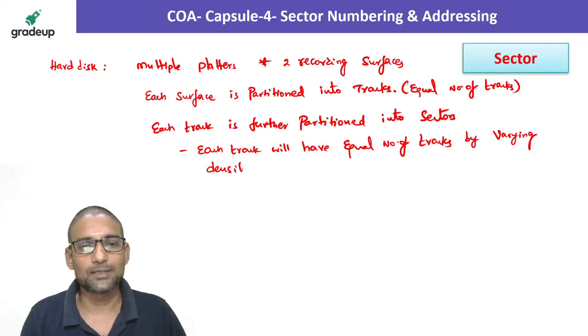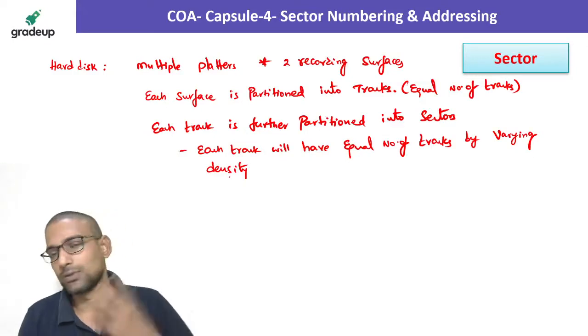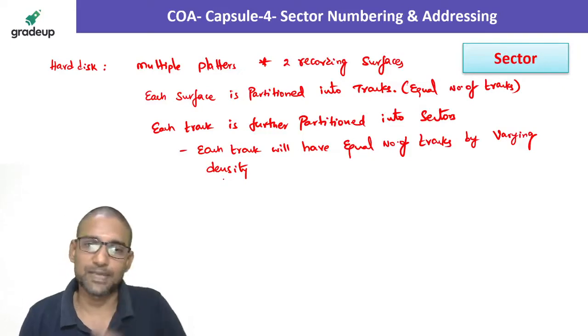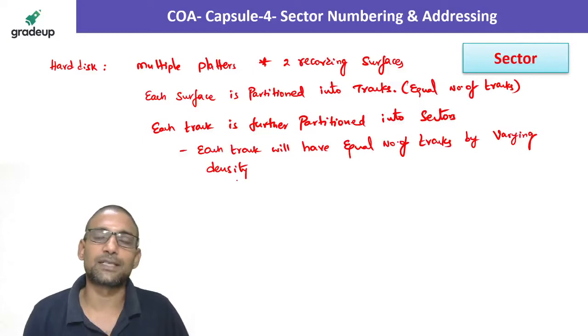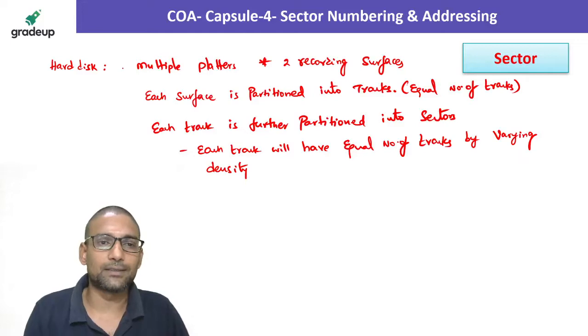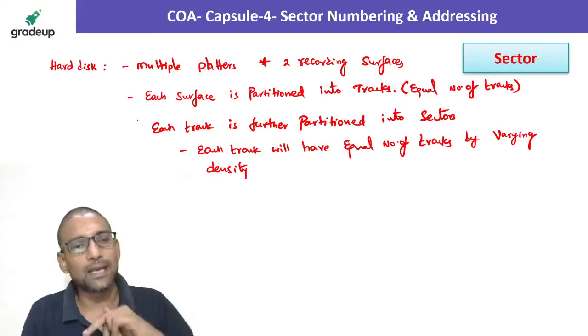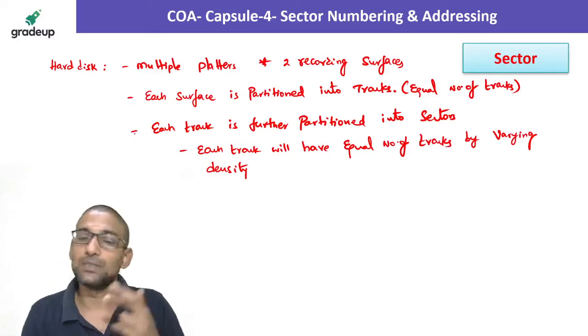A small track and big track will have equal number of sectors by varying density. But this is not the case in CD, DVD. That we will discuss as tomorrow's capsule, capsule number 5, CLV and CAV capsule. A platter is partitioned as two surfaces, surface is partitioned as tracks, track is partitioned into sectors.